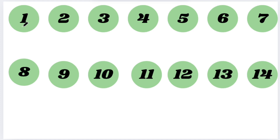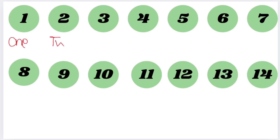Let's see some examples. The first number is 1. I will write it in words: O, N, E. Then this one is 2, so T, W, O.